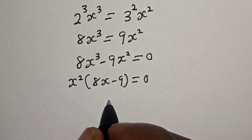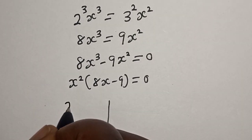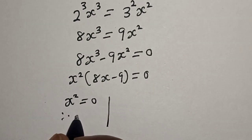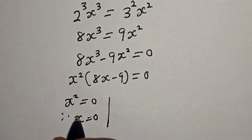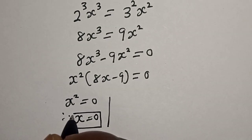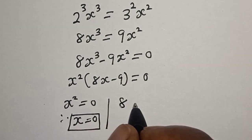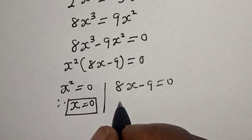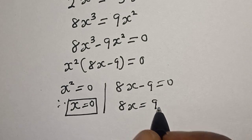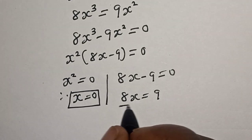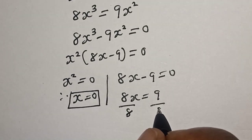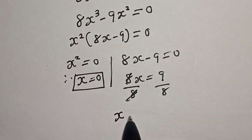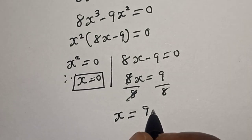There are two cases here. Case one: x² equals 0, therefore x equals 0. Case two: 8x minus 9 equals 0, so 8x equals 9. Dividing both sides by 8, x is equal to 9 over 8.